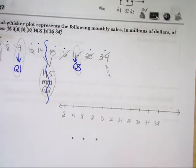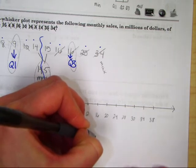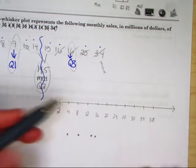Put a dot at your quartile 3, 16. Look how close those are. And put a dot at your max, 34.